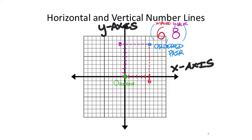Some students say there's a zero right there, but it's actually an O, which stands for what they call the origin — that's where the values start in either direction for both the x and y number lines.